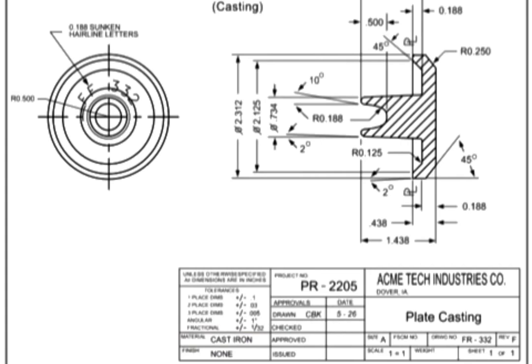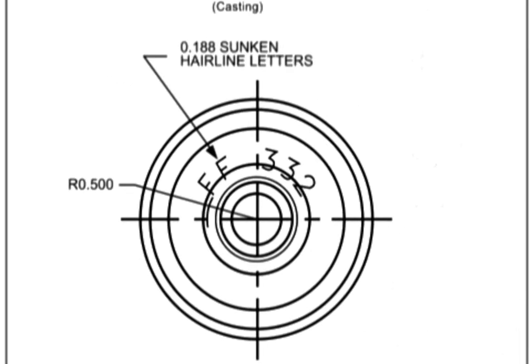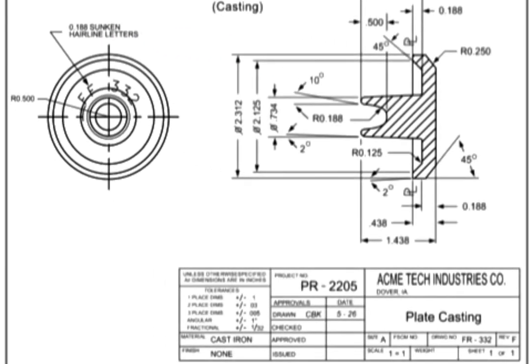A critical part of any configuration control process is adequate identification of manufactured parts. Most castings have their part numbers permanently cast into the part. The dimensions on a casting drawing are what the foundry or manufacturer uses to make a pattern or mold and are the final cast dimensions of the part. Other information that may be included on a casting drawing are mold lines, datum plane references, and even information on how to best remove the part from the mold.